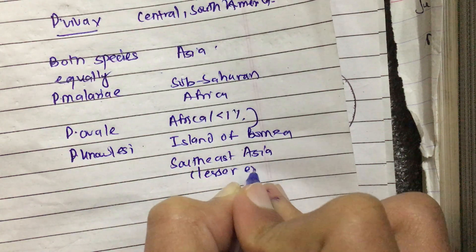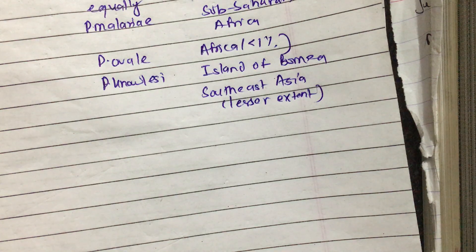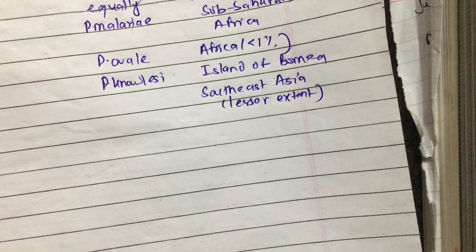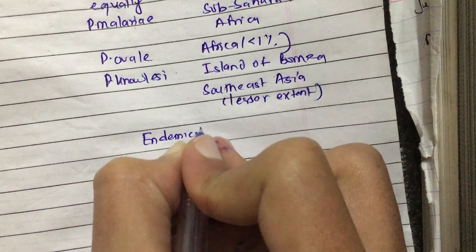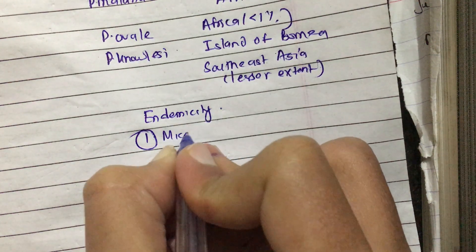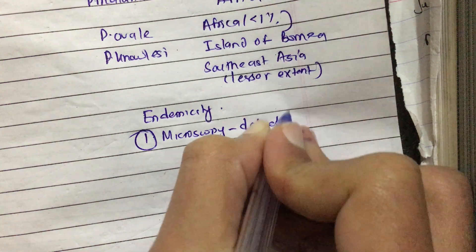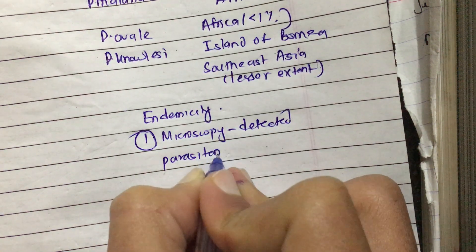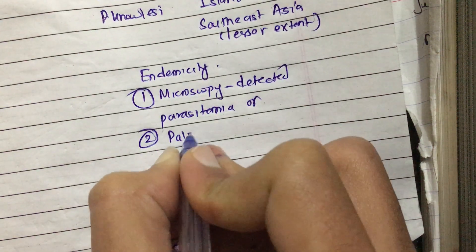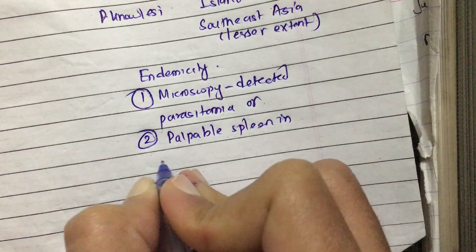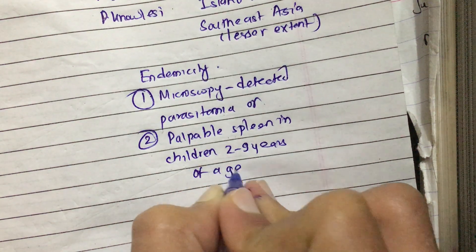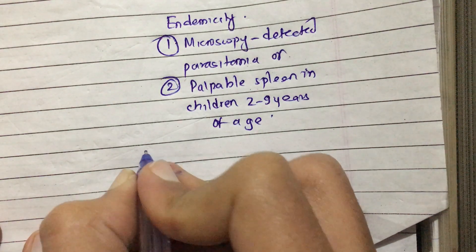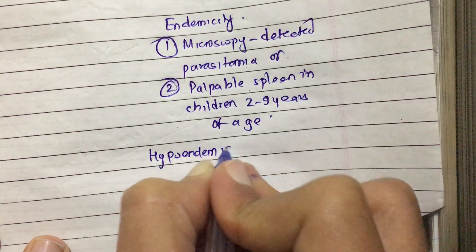Endemicity has been defined in terms of rates of microscopically detected parasitemia or palpable spleen in children 2 to 9 years of age. According to this, we have defined endemicity into hypo-endemic areas, meso-endemic areas.